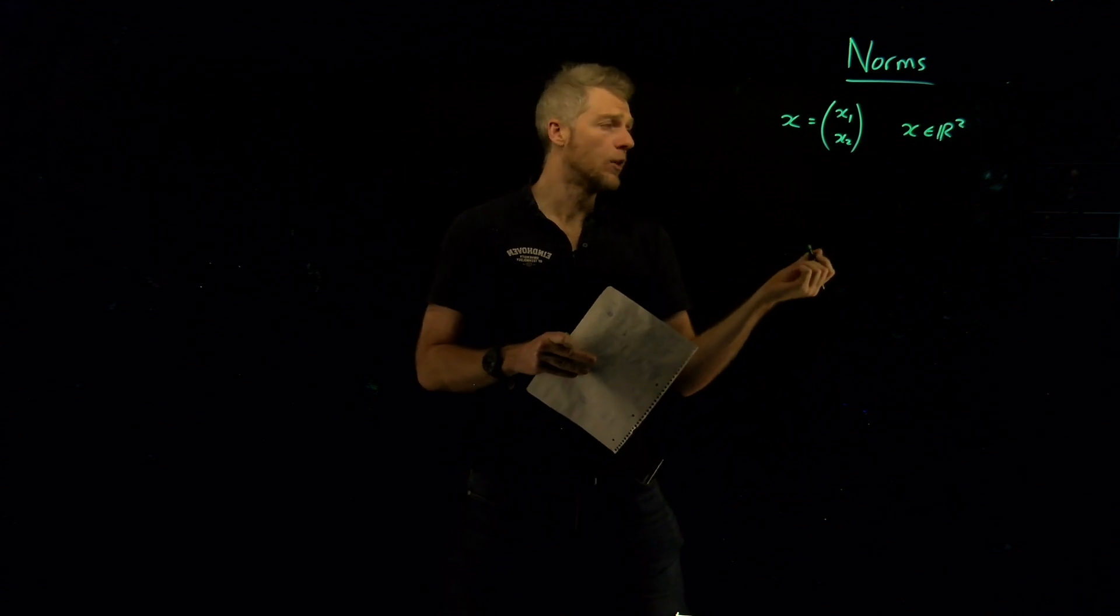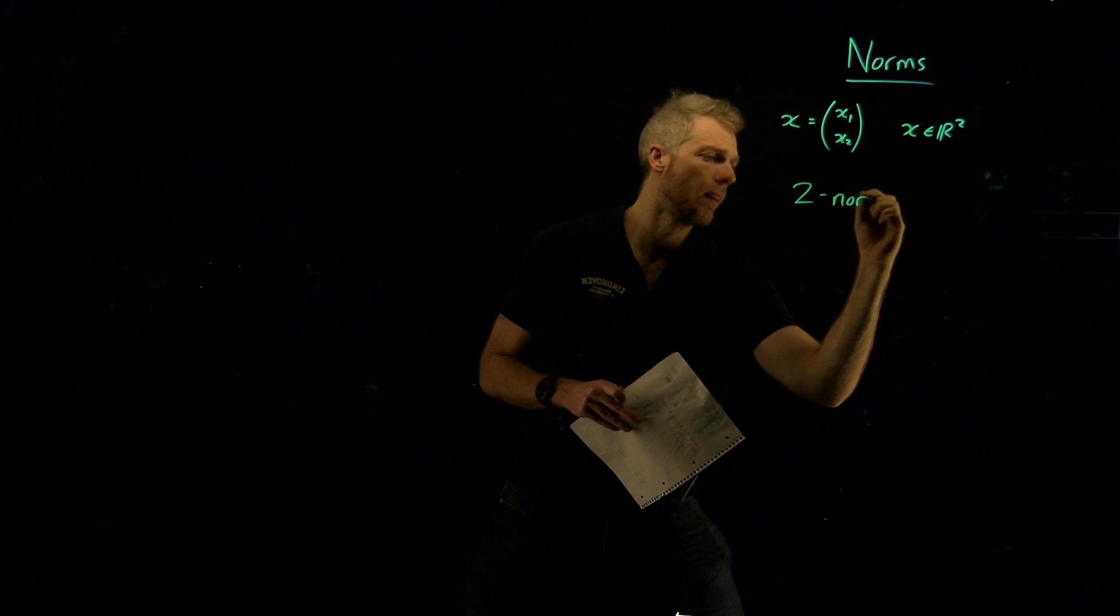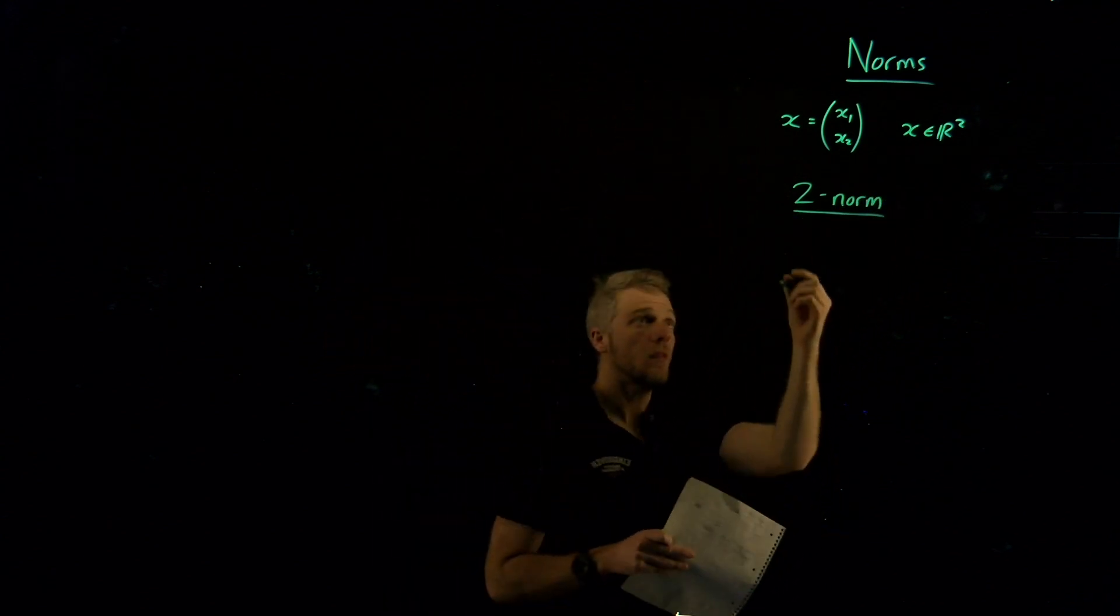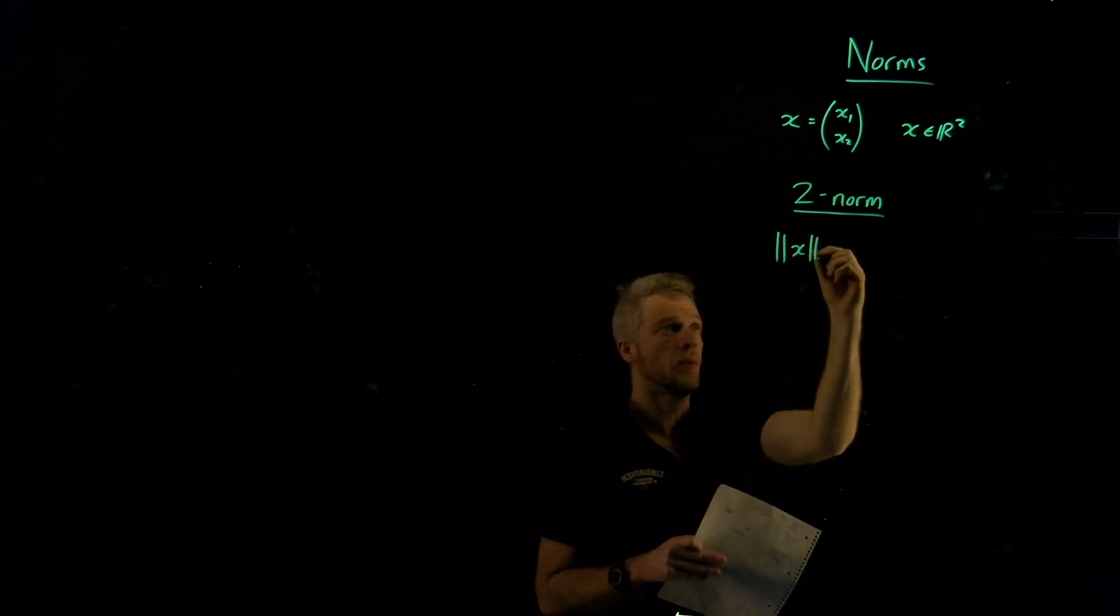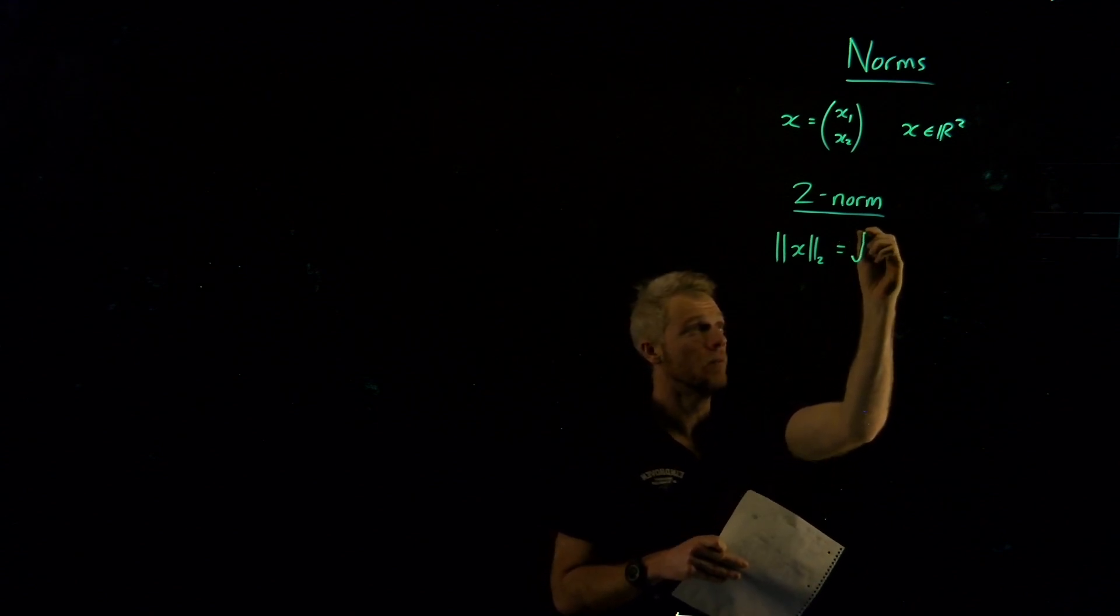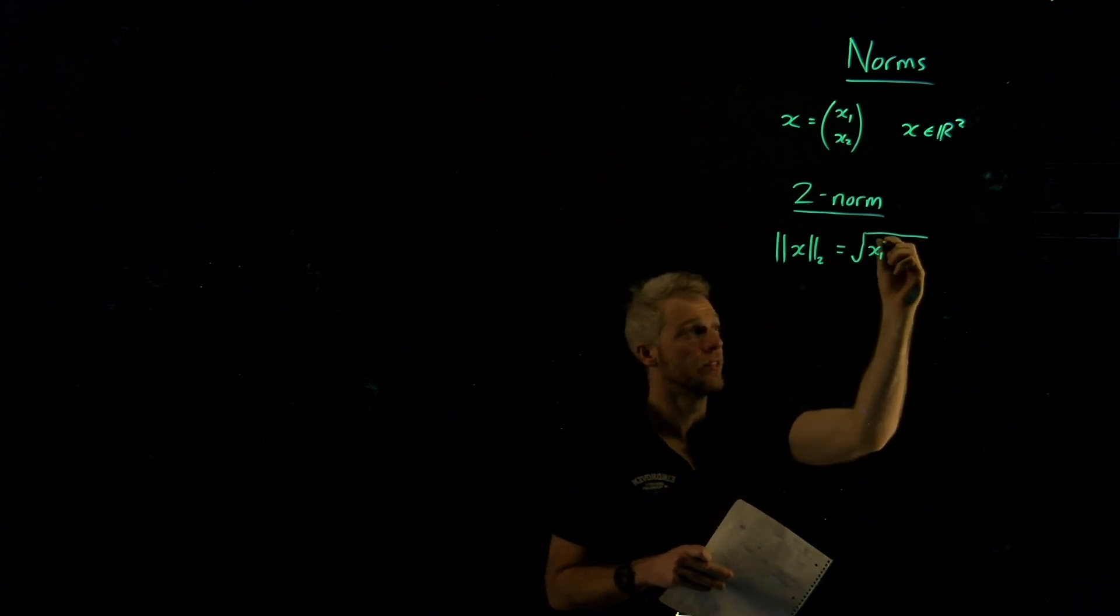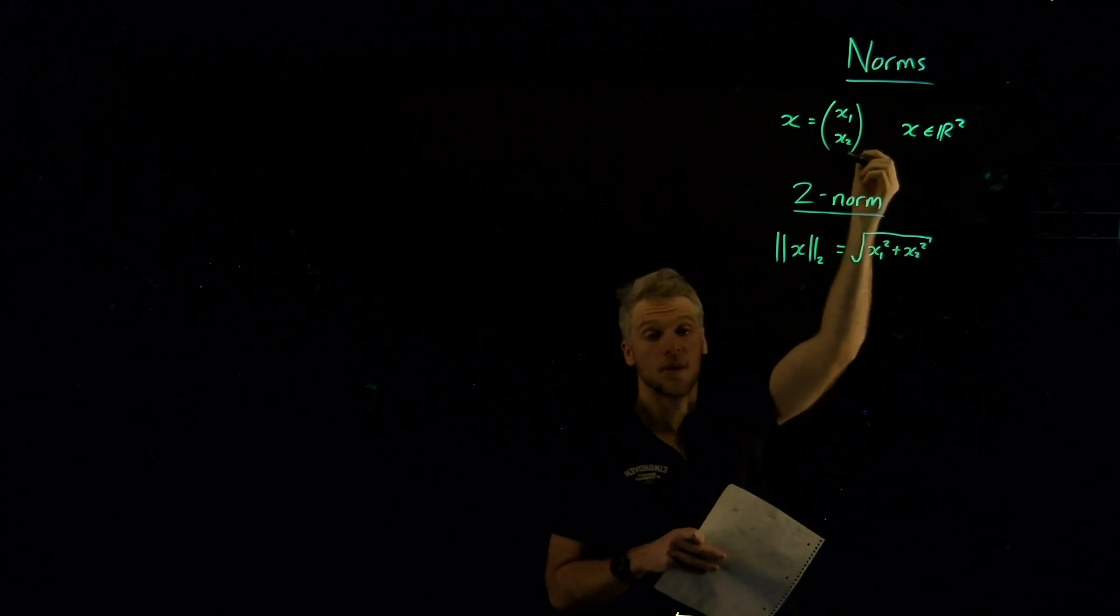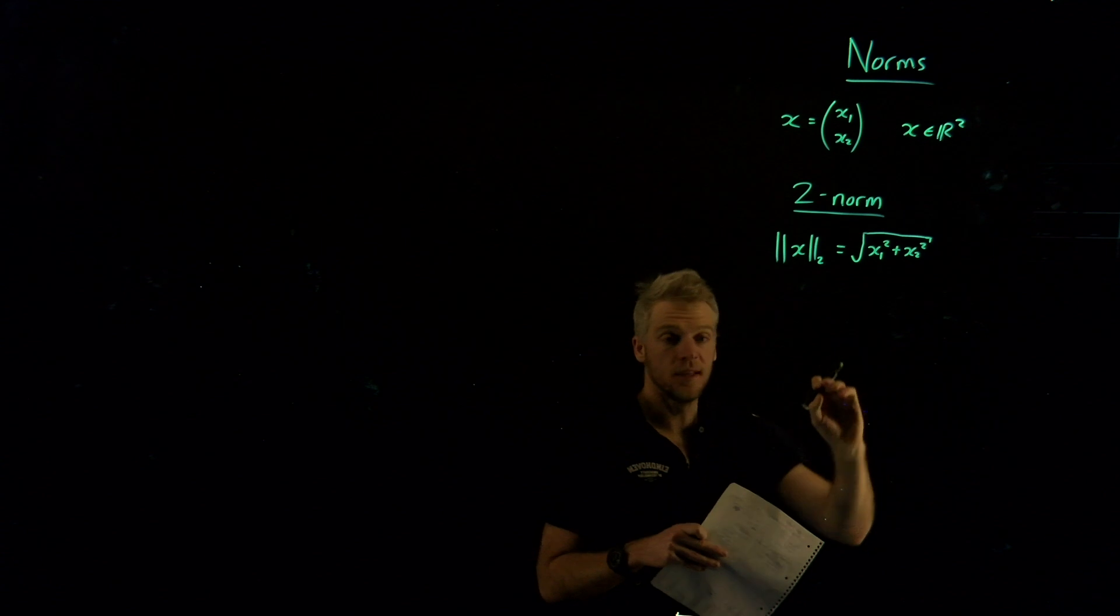The first type of norm I want to talk about is something called a 2-norm. What is a 2-norm? Well, the 2-norm is defined by the following. The 2-norm of x is written as this kind of double line here, and then the x in the middle with a subscript 2 here, to note it's the 2-norm. And it's defined as the positive square root of all the terms inside of it squared and added together. So x1 squared plus x2 squared. And in principle, if you had an x3 at the bottom, then you'd have a plus x3 squared here as well. That's what the 2-norm is defined as.